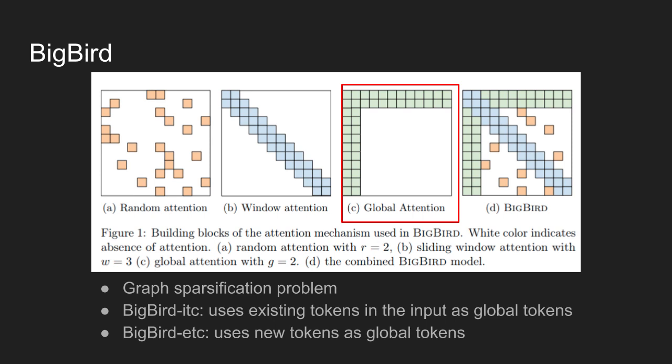Big Bird Internal Transformation Construction, also called as Big Bird ITC. In this case, existing tokens in the input are made global to attend to all other tokens in the sequence.